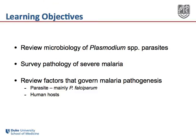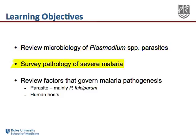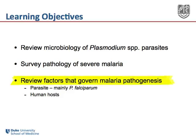The learning objectives for this micro lecture are to briefly review the microbiology of plasmodium species parasites, survey the pathology of severe malaria, and finally review factors that govern malaria pathogenesis from the perspectives both of the parasite and of us human hosts.